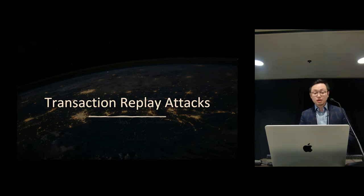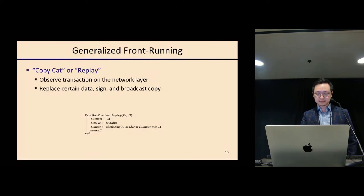We have also proposed a new form of attack which we call transaction replay attack in the paper. What's funny is, in this attack, the attacker is trying to be a copycat. Basically, the attacker observes transactions on the network layer and tries to replace certain data in the transaction to mimic what the victim is doing. In a sense, the attacker can extract BEV without understanding anything about what the victim is trying to do.